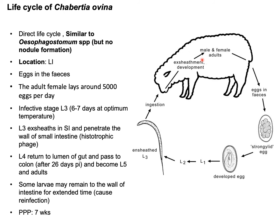The L3 larvae reach the small intestine, where exsheathment occurs — the outer covering of L3 is cast off. The L3 stage then penetrates the wall of the small intestine and becomes L4. From L3 to L4, the larvae are found in the wall of the intestine. The L4 larvae migrate through the intestinal wall and find their way into the lumen of the large intestine, where they molt to become L5 and then adults, which lay eggs.